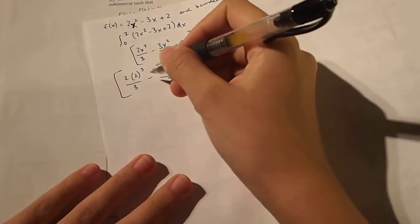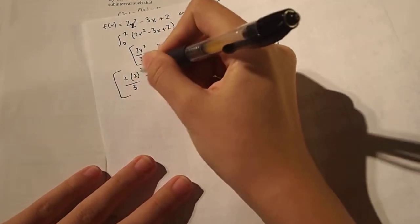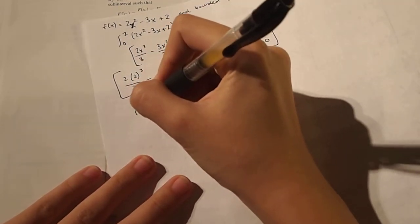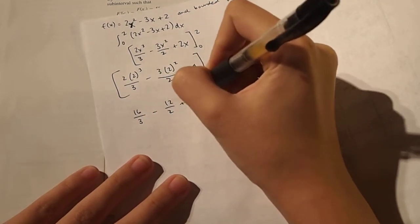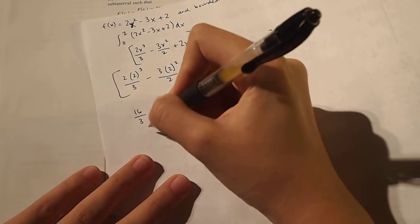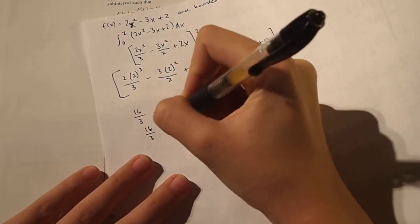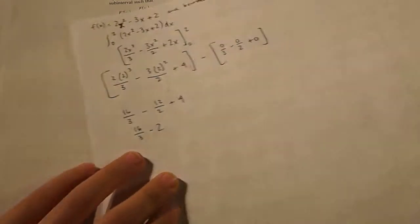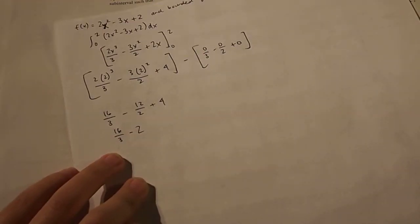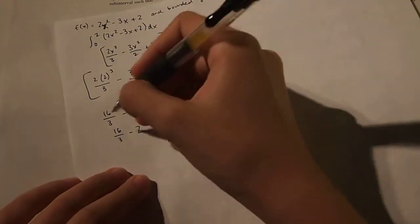And 2 to the third power is 8, so 8 times 2 is 16 over 3 minus 12 over 2 plus 4. And then this further simplifies to 16 over 3 minus 6 plus 4, so minus 2. So we end up getting this, and then this is equal.